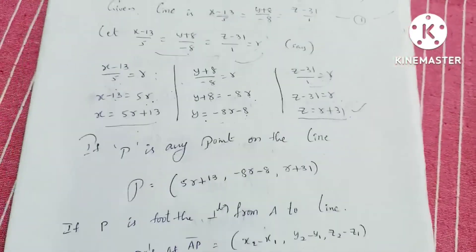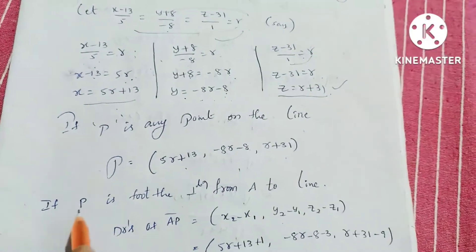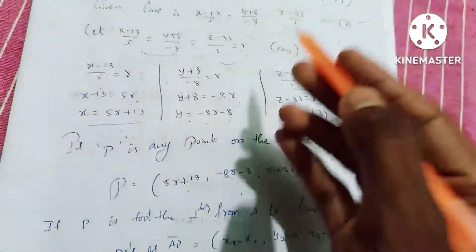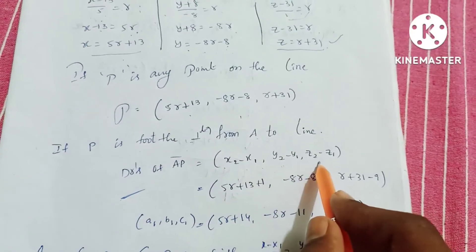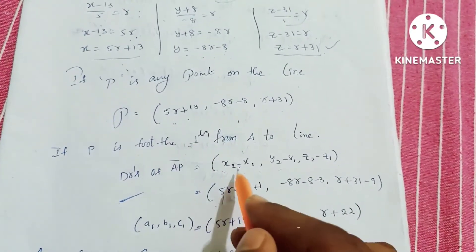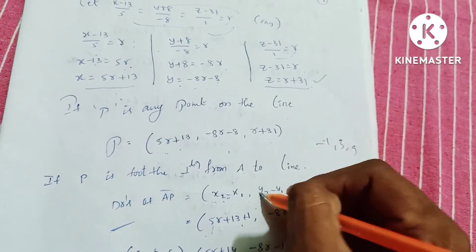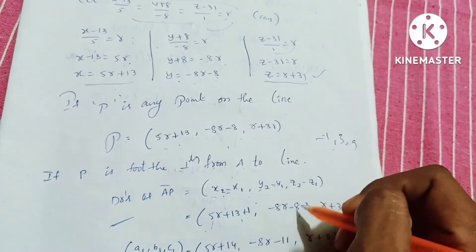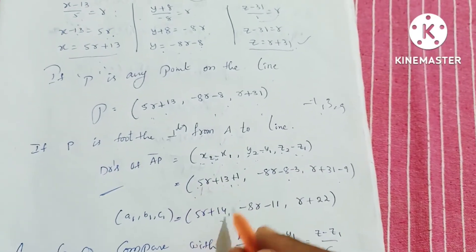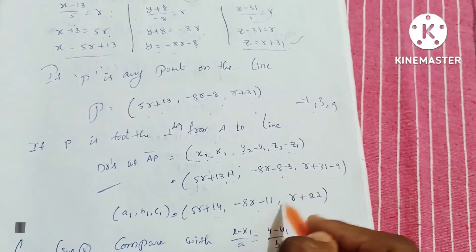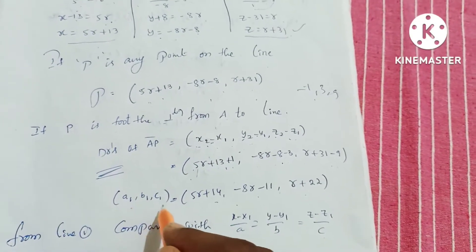If P is any point on the line, then P equals (5R plus 13, minus 8R minus 8, R plus 31). If P is the foot of the perpendicular from A to the line, the direction ratios of AP are x2 minus x1, y2 minus y1, z2 minus z1. So: (5R plus 13) minus (minus 1), (minus 8R minus 8) minus 3, and (R plus 31) minus 9, giving 5R plus 14, minus 8R minus 11, and R plus 22.